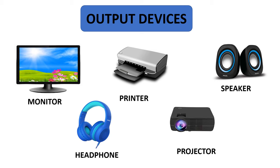Output devices receive information from the computer and give it to the user in a human-readable form like text, audio, and video. Examples of output devices are monitor, printer, speaker, headphone, projector, and more.